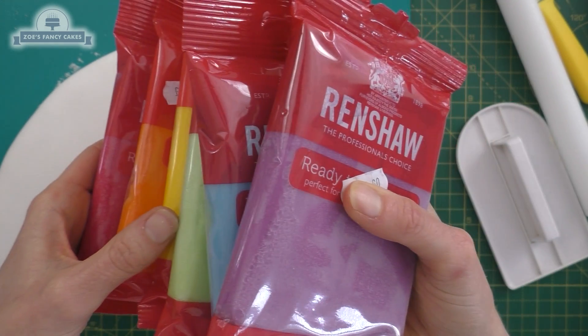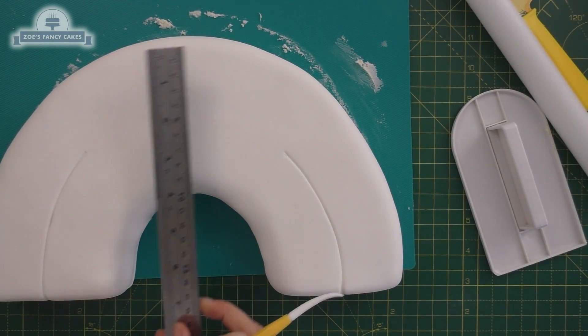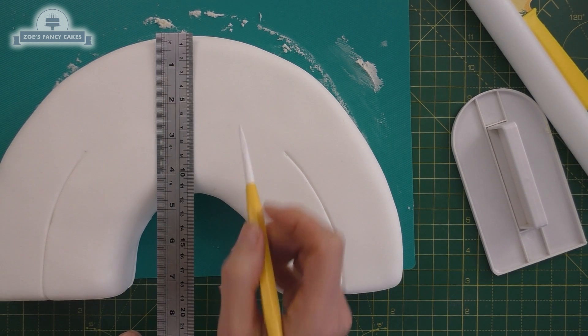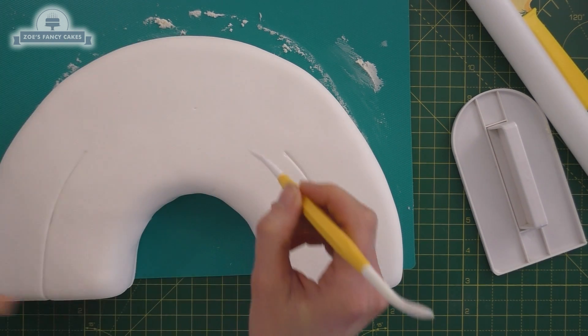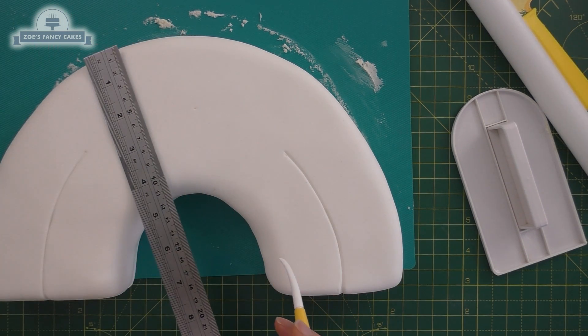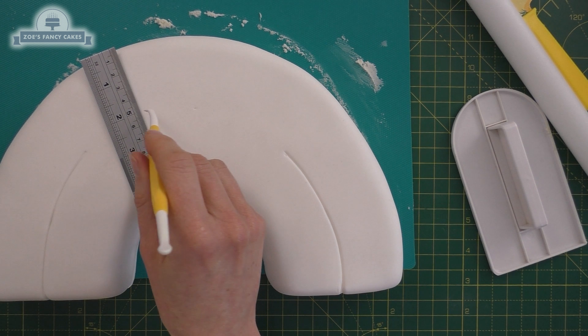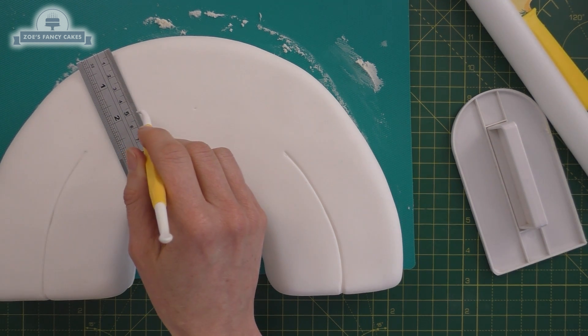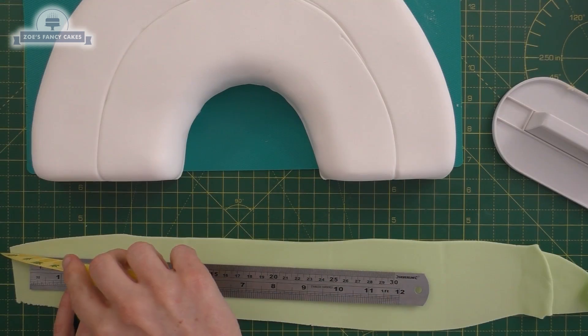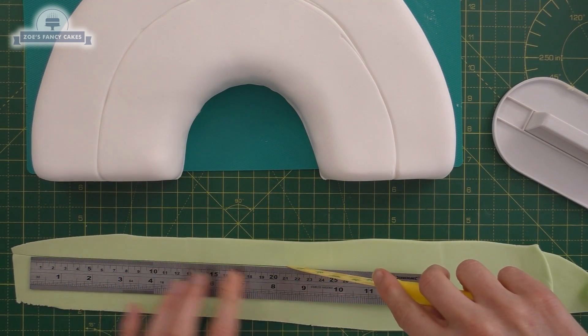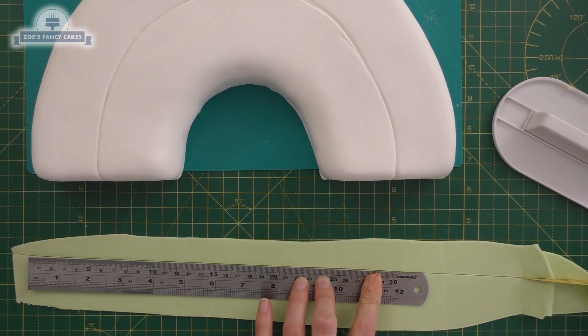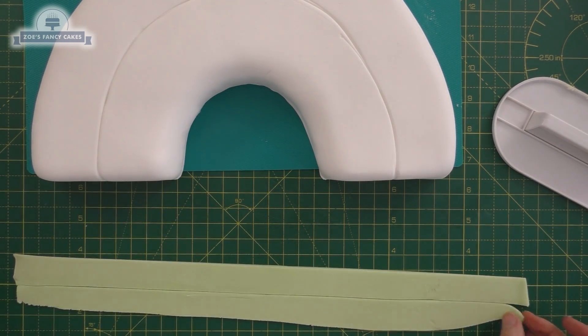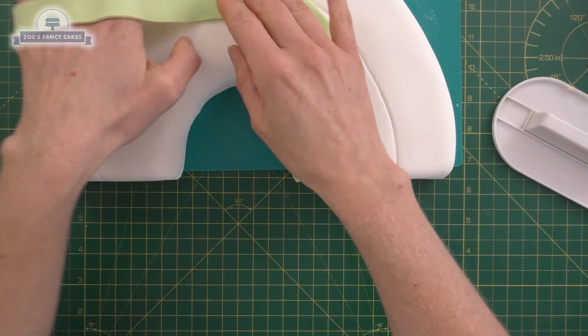These ones are quite soft fondant, so just be careful when you're doing it. Math is not my strong point and I wasn't very good at dividing this, but I decided each one was going to be about an inch thick. I've tried to divide my rainbow in half first, so just put the center line on, and then I'm going to work from either side of that center line. I'm going to start with my green stripe, so roll it fairly thin.